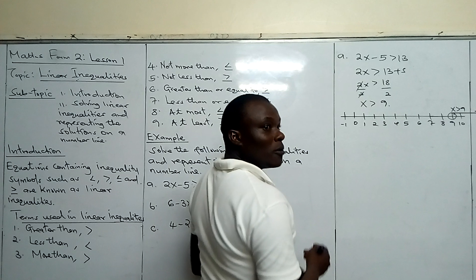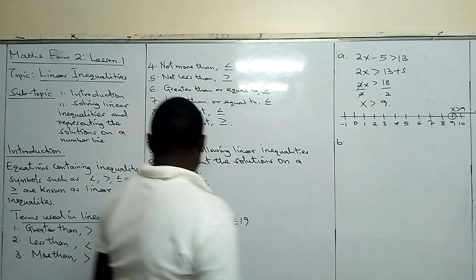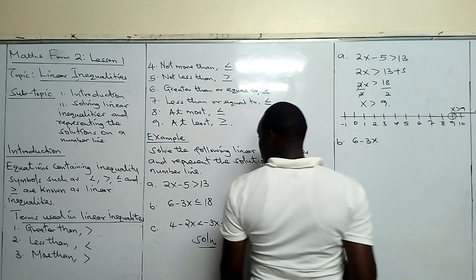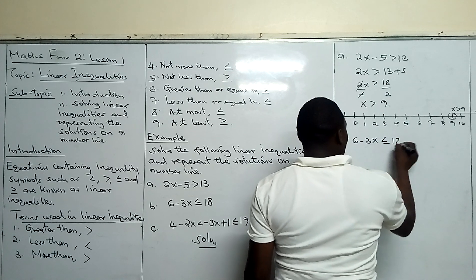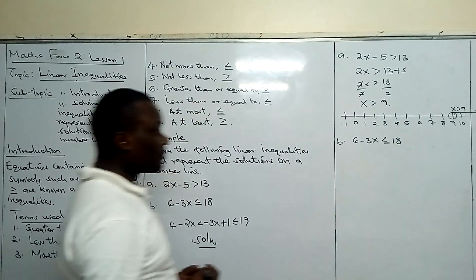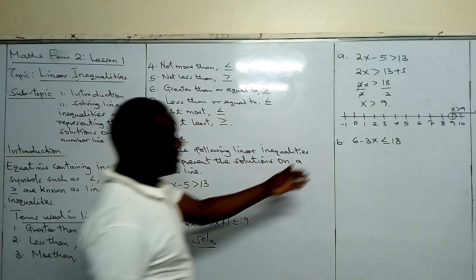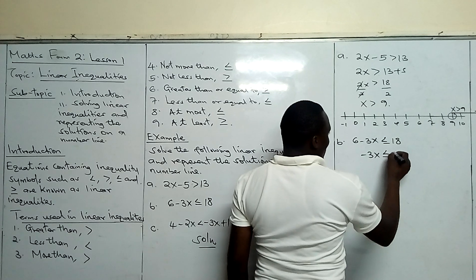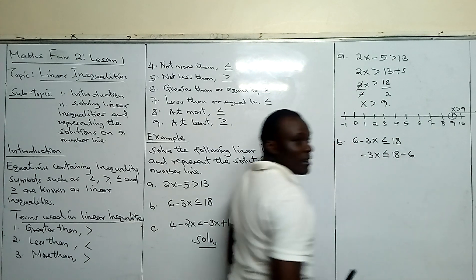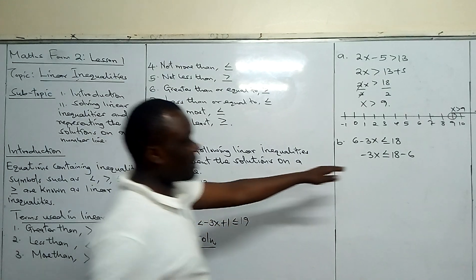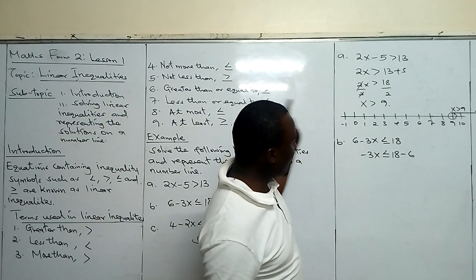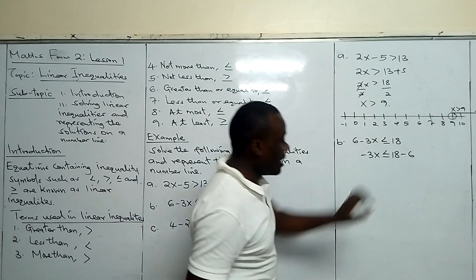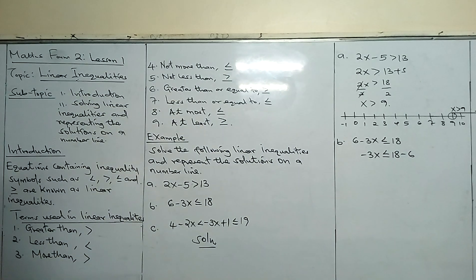Now let's go to B. In B, we have 6 minus 3x, less than or equal to 18. We will start by taking 6 to the other side. We will have minus 3x less than or equal to 18 minus 6. Remember, the symbol here acts the same way an equal sign does.